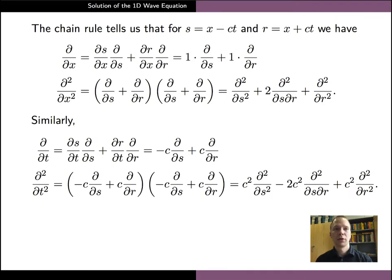Since the variable s is defined in terms of x and t, the chain rule tells us that we can express the partial derivative with respect to x in terms of the partial derivatives with respect to s and r. In this formula, the derivatives of s and r with respect to x are both equal to constant 1 because of the way we defined our new variables.